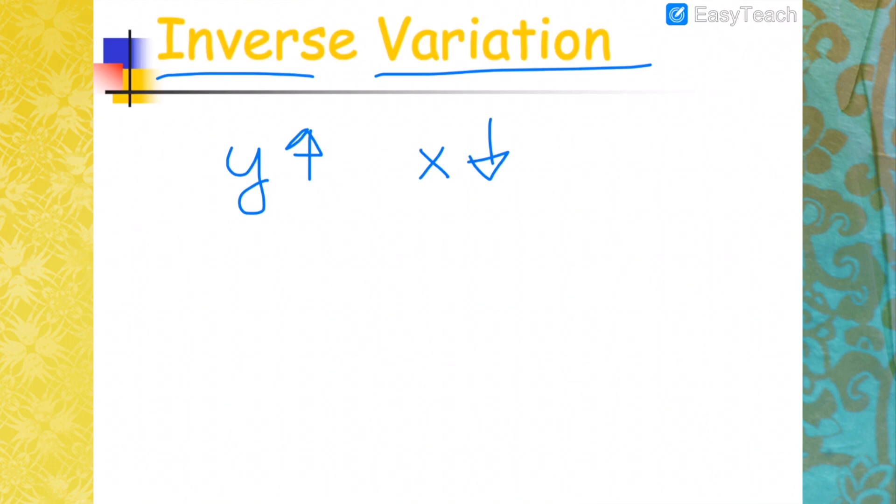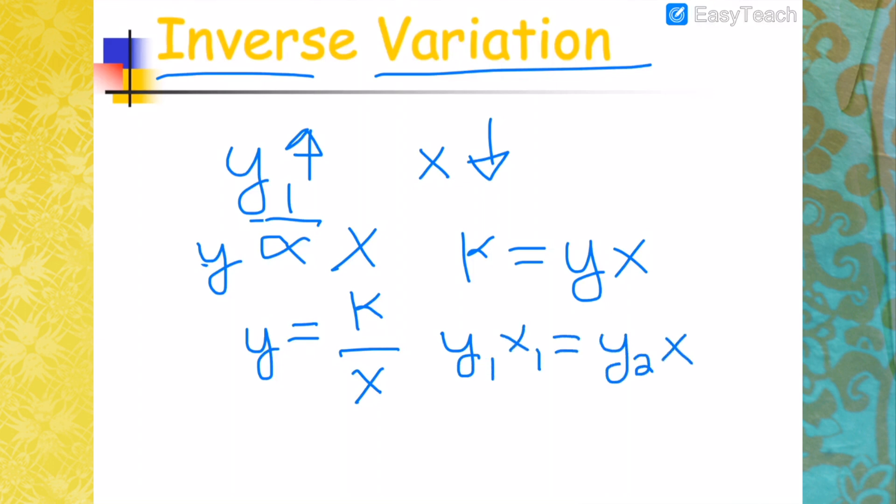Why is it multiplication? Because it will be Y varies inversely. So that means that's 1 over your X. So in terms of formula, that will be Y equals K over X. So rearranging this, you will have K equals YX. That is the reason why you will have multiplication. Y1 X1 equals Y2 X2.